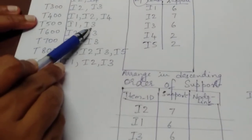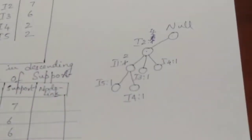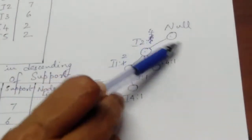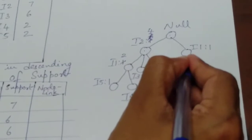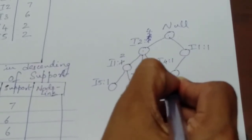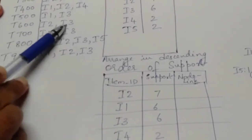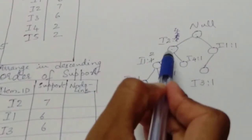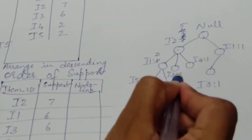The fifth transaction is I1, I3. The null node only has an I2 branch, so I create a second branch from root: I1 with support 1, and I3 with support 1. For the sixth transaction, I2, I3 — I already have that I2 node, so I increment its support and increment the I3 child connected to I2 to support 2. The sixth transaction is complete.